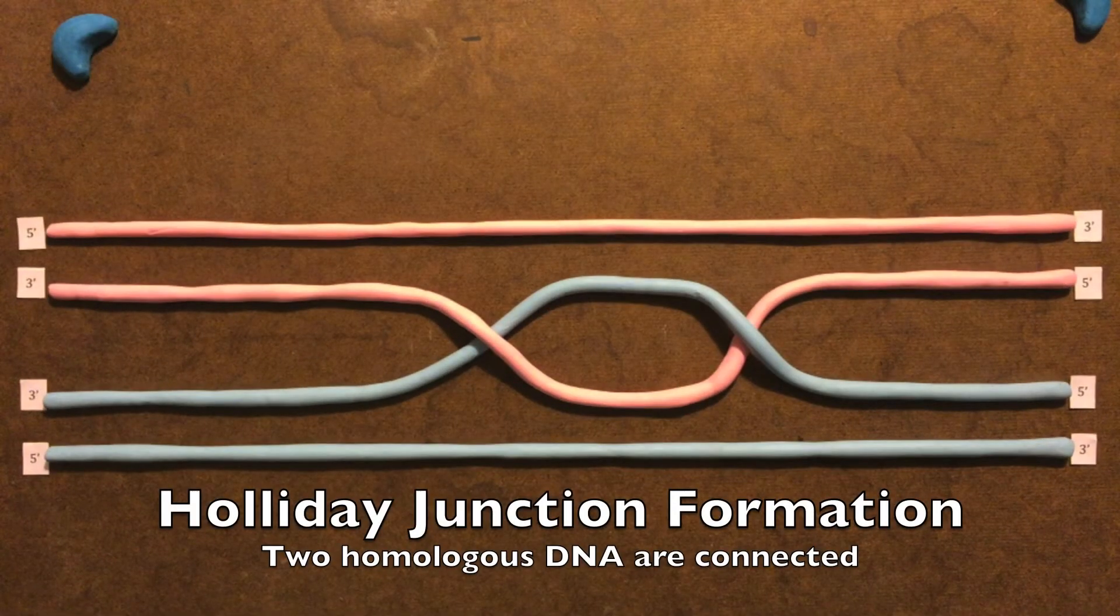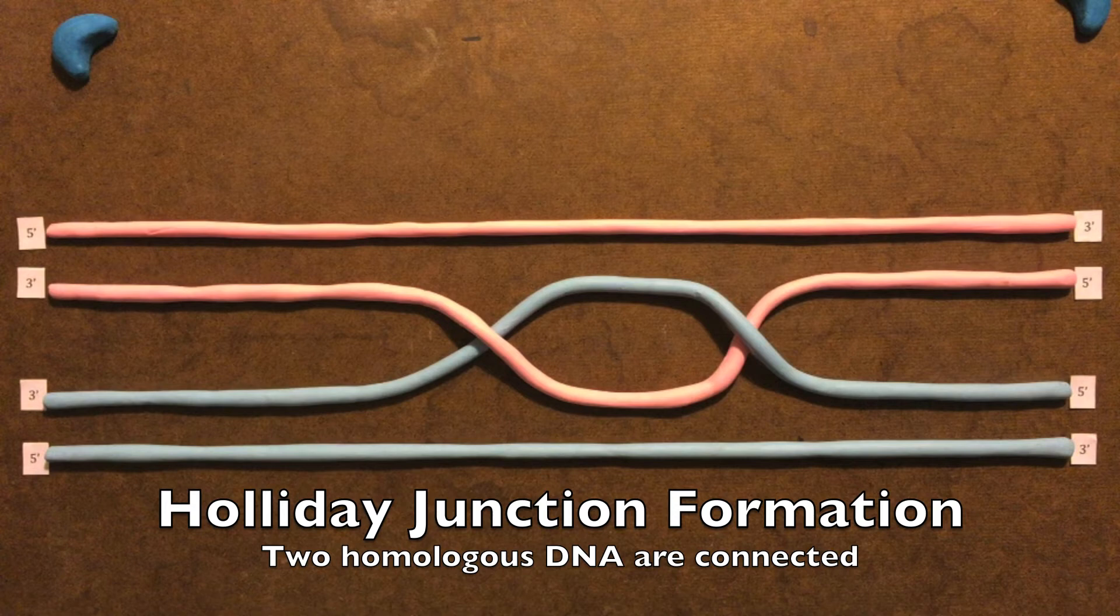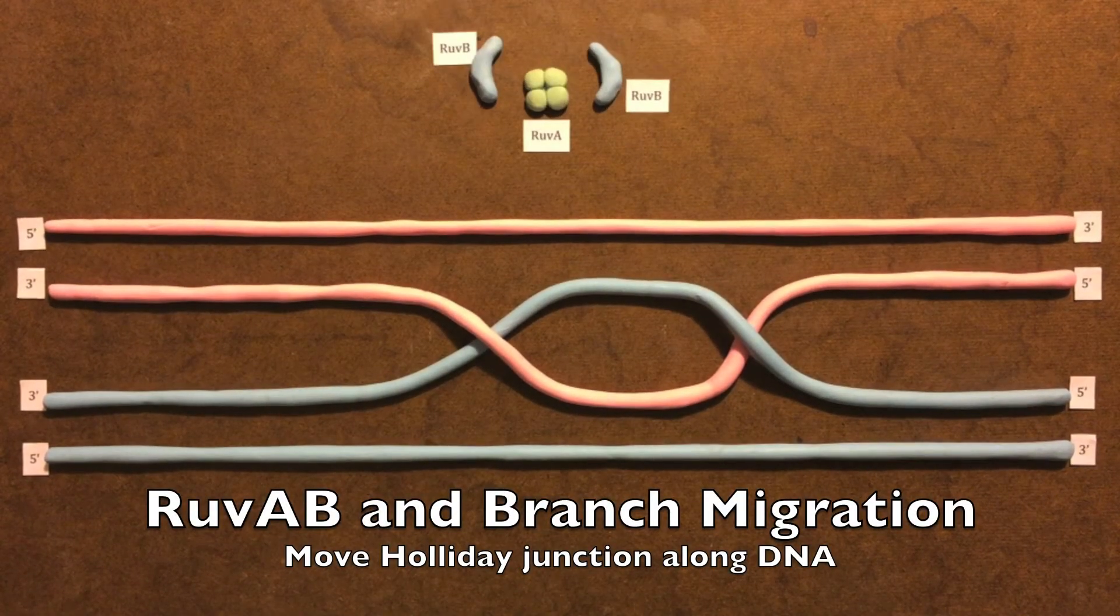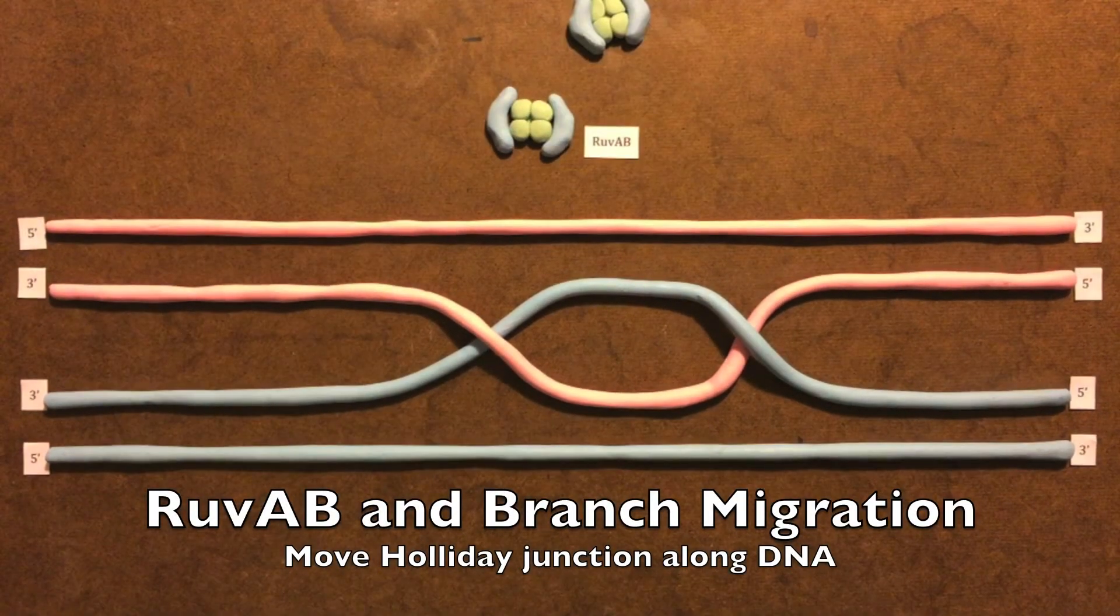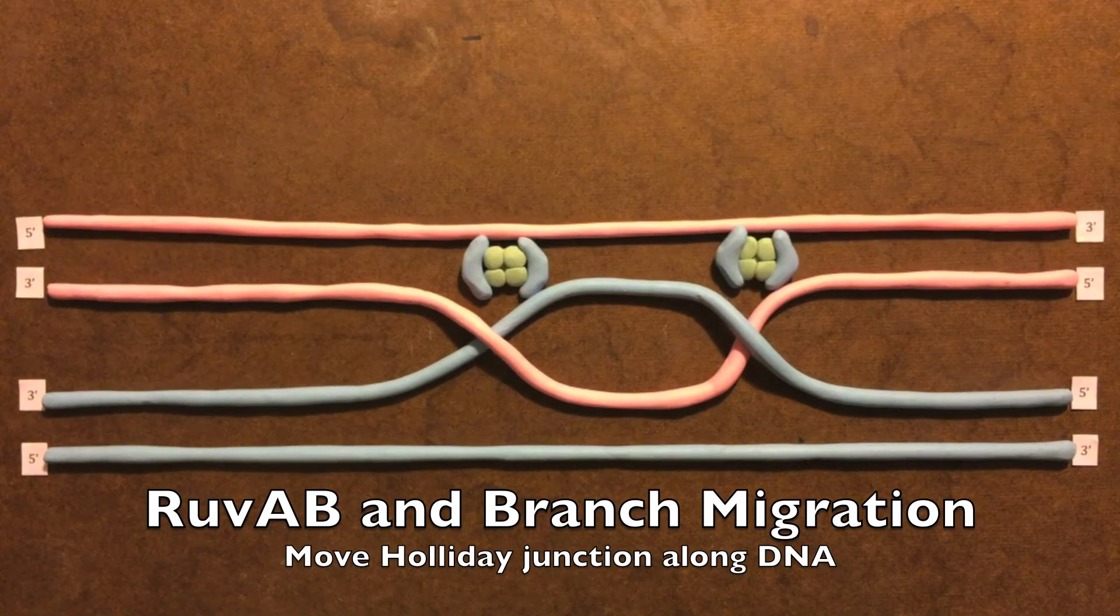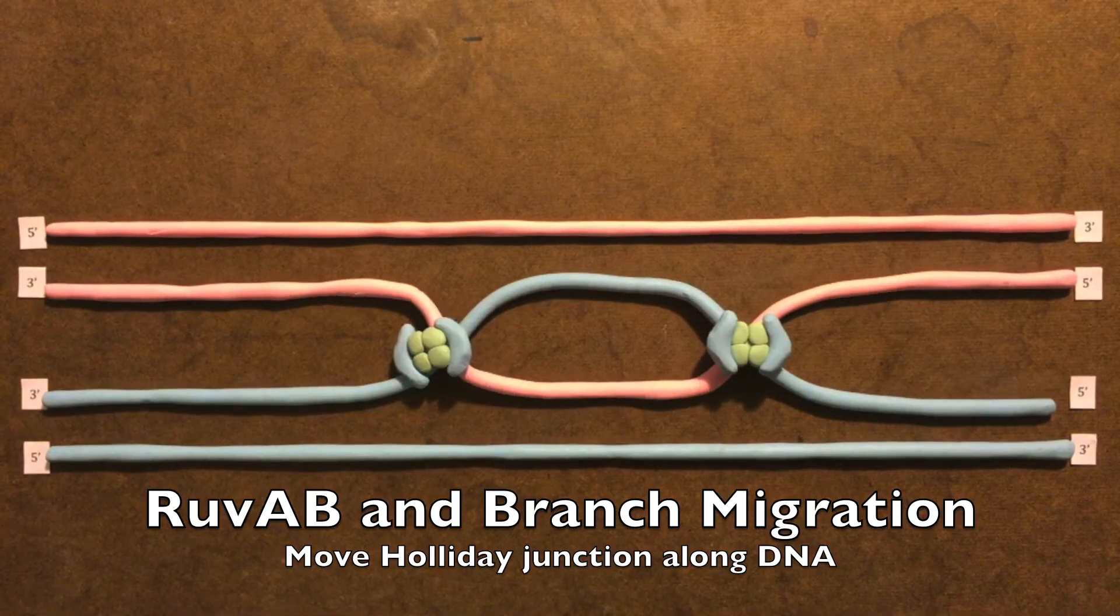The two homologous DNA are connected by DNA strands that are crossed to construct a structure known as the holiday junction. The branch migration is stimulated by Ruv-A and Ruv-B proteins, also known as Ruv-AB, to move the junction along the DNA.